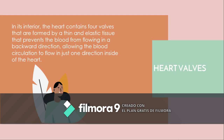The heart contains four valves formed by thin and elastic tissue that prevent the blood from flowing in a backward direction, allowing blood circulation to flow in just one direction inside the heart. These valves are the aortic semilunar valve, tricuspid semilunar valve, pulmonary semilunar valve, and bicuspid valve.